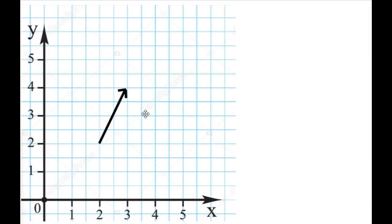In the world of physics, a vector is a line segment with a direction, which is represented by an arrow and defined by the direction it's pointing towards and its length, which is also called magnitude.